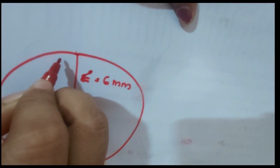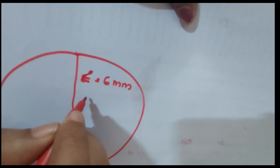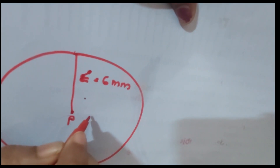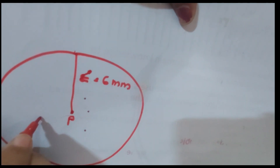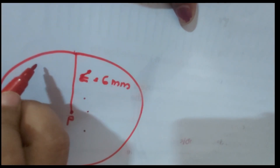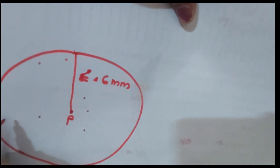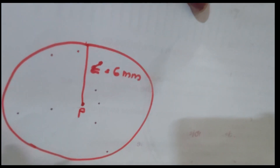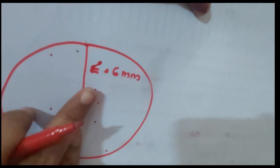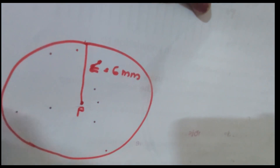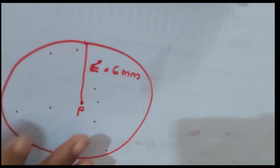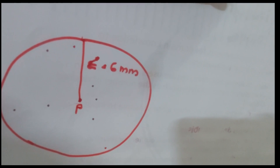From p, there are eight points within the epsilon neighborhood — satisfying the minimum point condition of 5. So p qualifies as a core object.